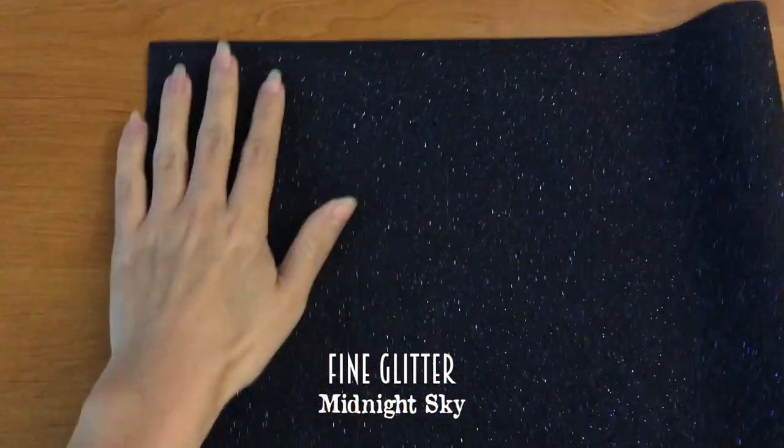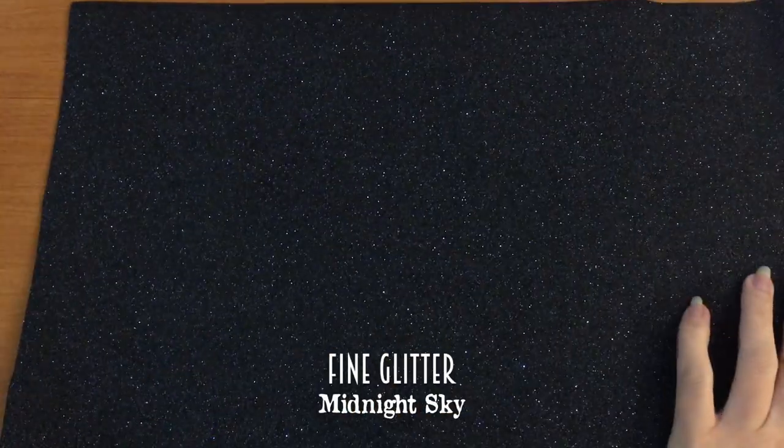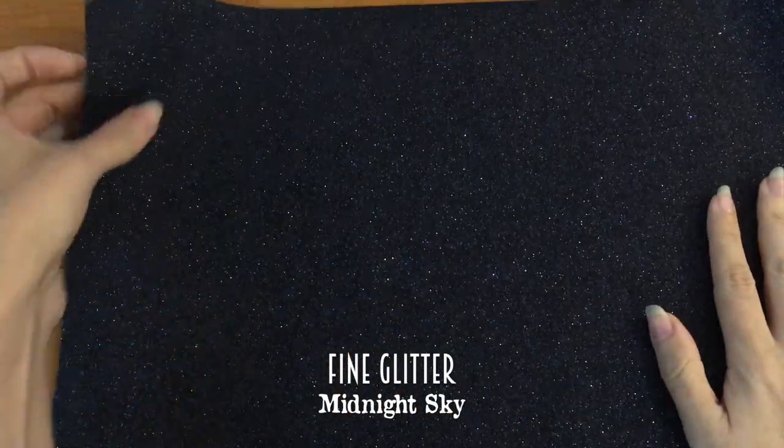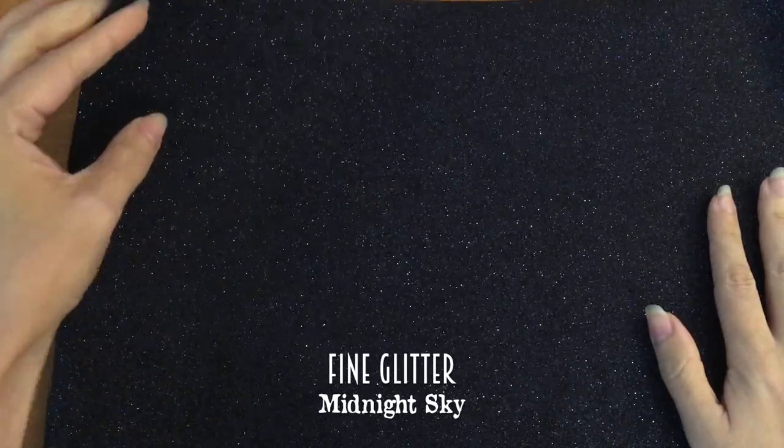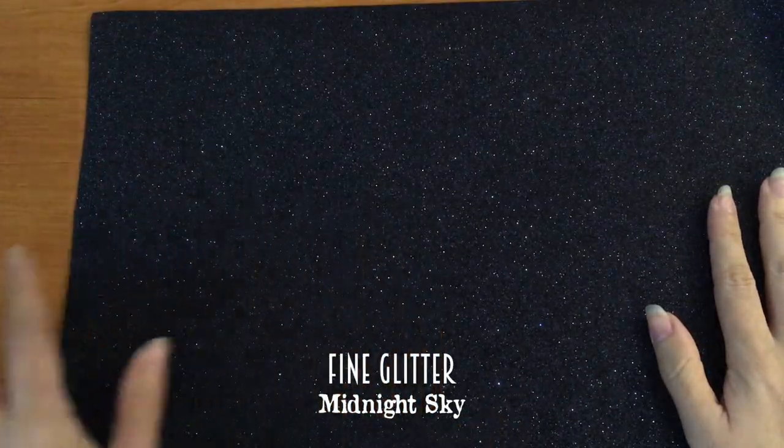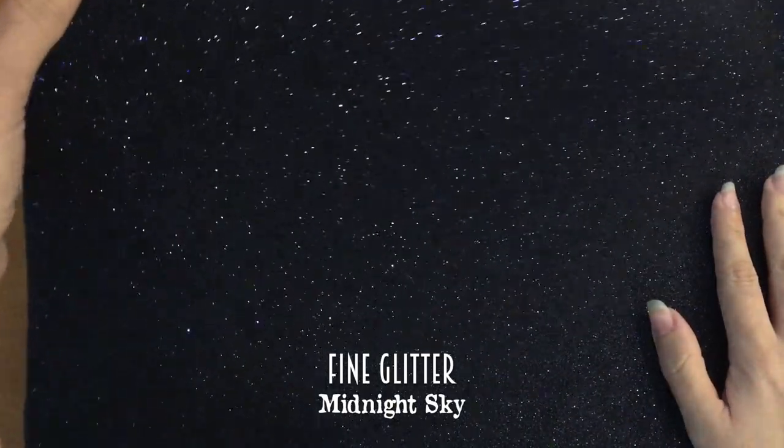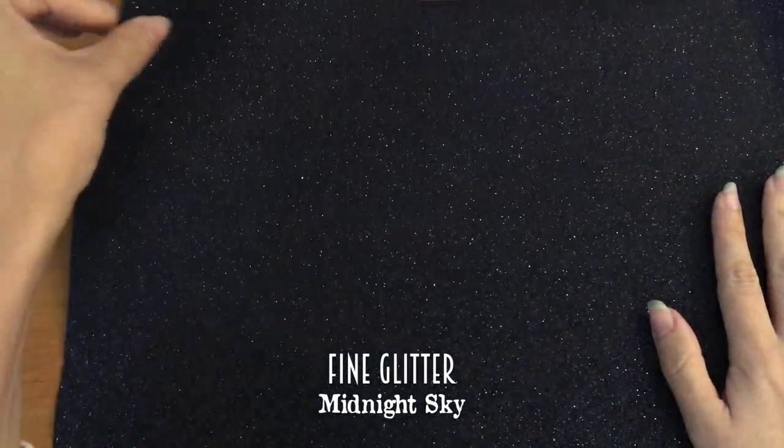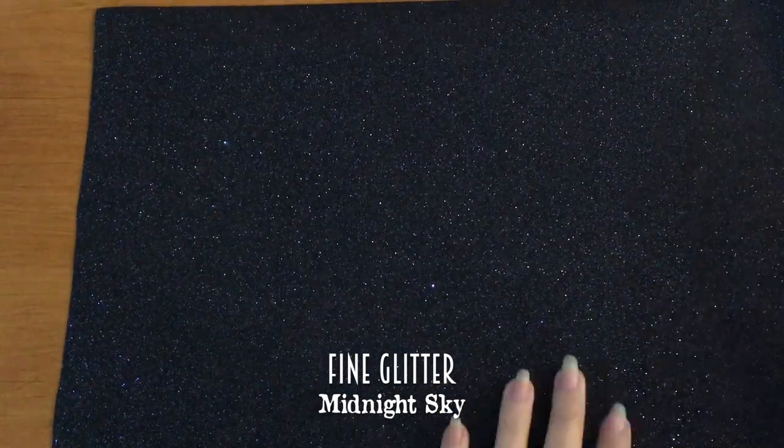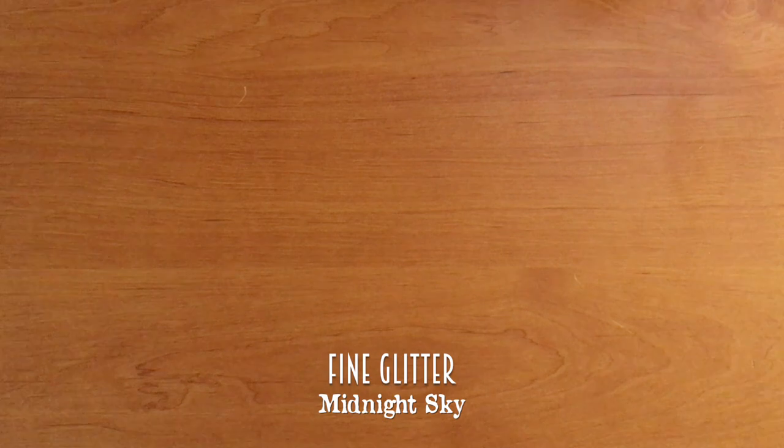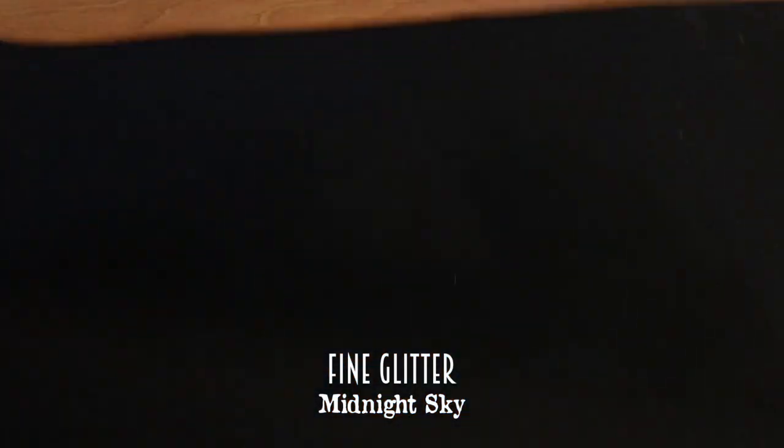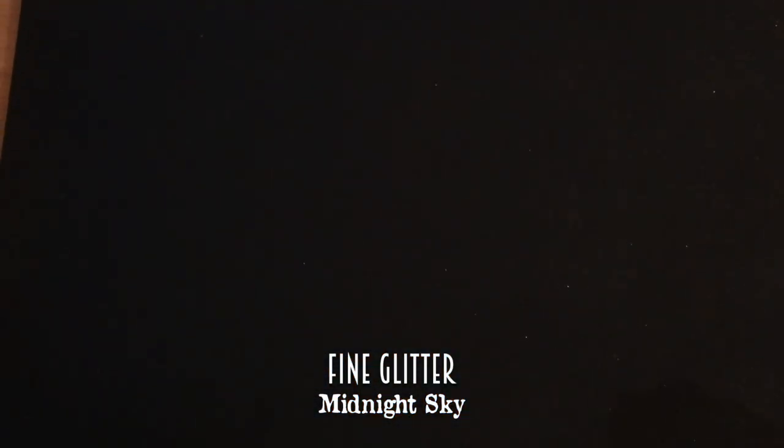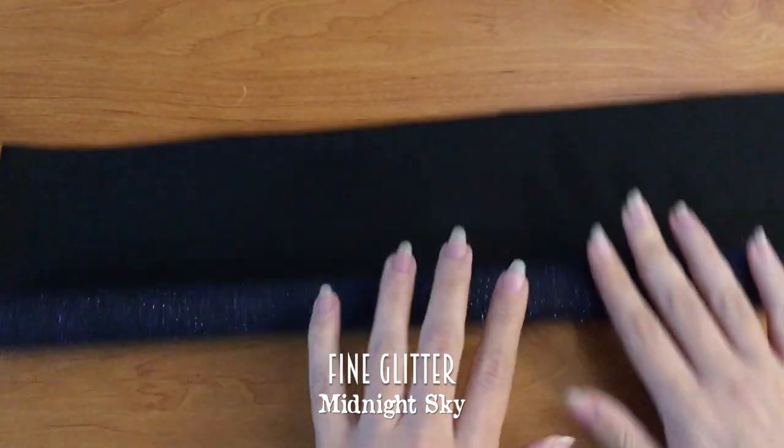And the last fine glitter is midnight sky. So this one shows nearly black on camera. But it's actually a very deep blue. And the glitters are blue, pink, and purple inside. So it's very very nice. It's even better like in real life. So yeah. Highly recommend that if you like darker colors. That's a stunning fabric. So midnight sky for this one.